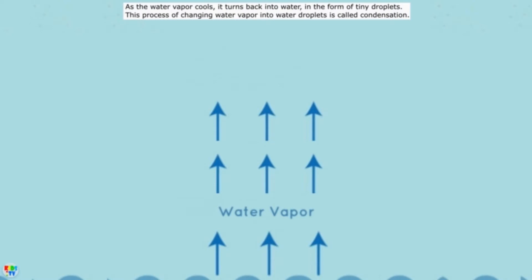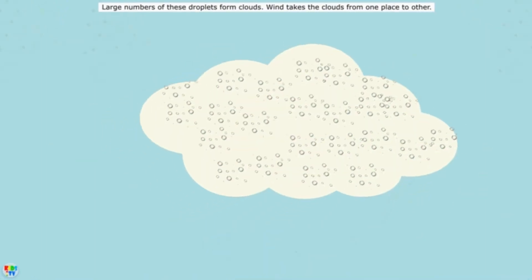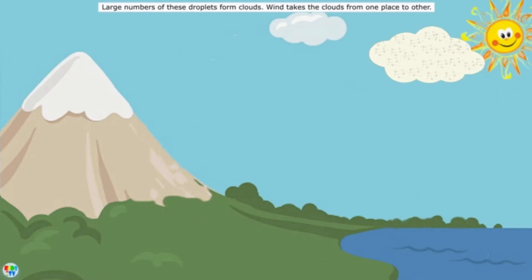As the water vapor cools, it turns back into water in the form of tiny droplets. This process of changing water vapor into water droplets is called condensation. Large numbers of these droplets form clouds, and wind takes the clouds from one place to another.